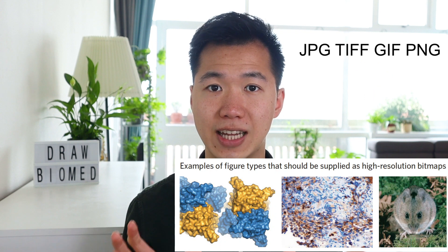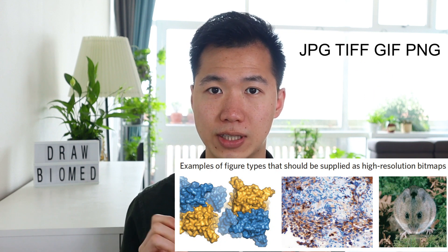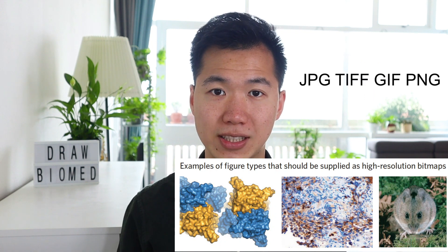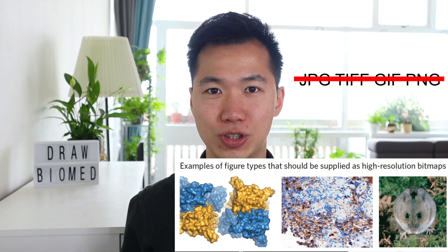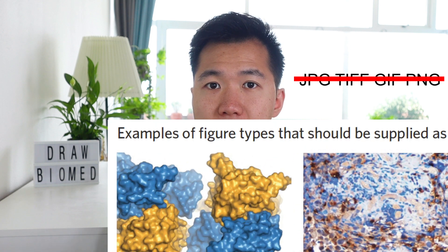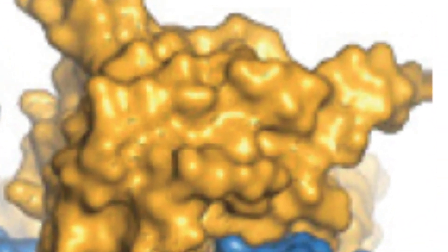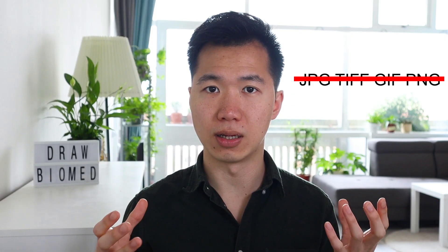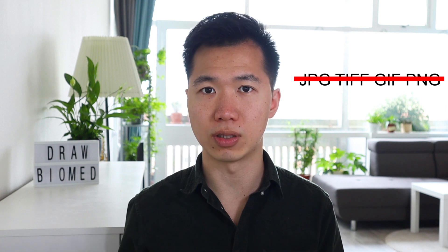There's a very big chance that you have saved your science figures into these formats, and this is not what the journals want. The reason they don't want bitmap images is that when you scale these images up, you will lose the resolution of the image, and it will be a big trouble when they are doing post-production of your paper.